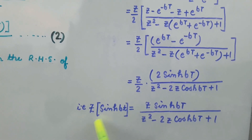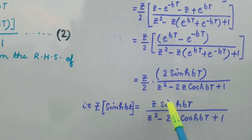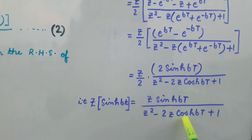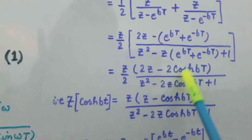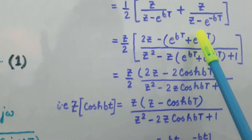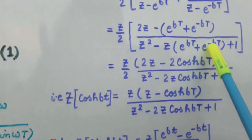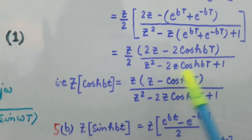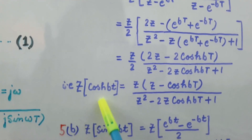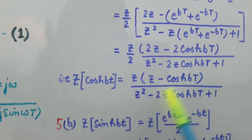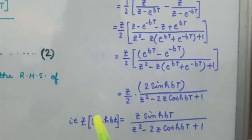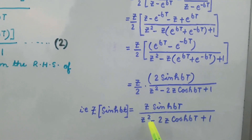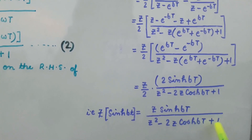So we find that the Z transform of sinh(bt) is given by Z·sinh(bT) / (Z² - 2Z·cosh(bT) + 1). Similarly, we used the identity e^(bT) + e^(-bT) = 2·cosh(bT) to derive the Z transform of cosh(bt) = Z(Z - cosh(bT)) / (Z² - 2Z·cosh(bT) + 1). Whereas the Z transform of sinh(bt) = Z·sinh(bT) / (Z² - 2Z·cosh(bT) + 1).